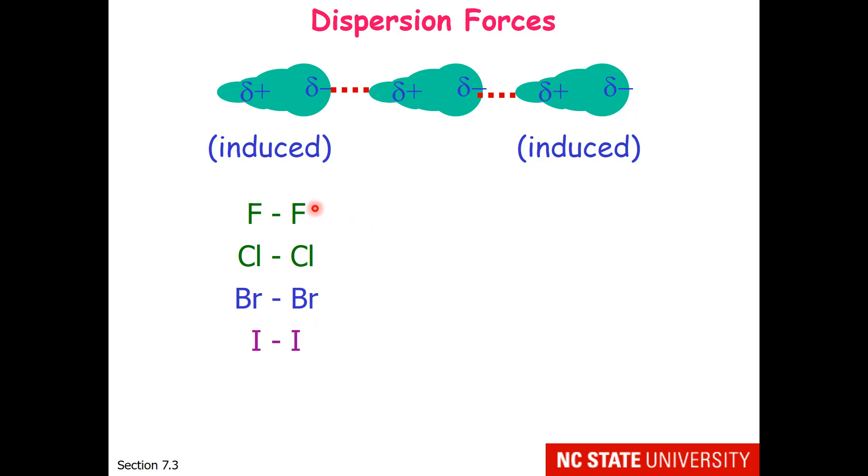The fluorine molecule, chlorine, bromine, and iodine molecule. Fluorine and chlorine at room temperature are gases. That means they have weak intermolecular attractions. Bromine at room temperature is a liquid. That means it has a stronger intermolecular attraction. And iodine at room temperature is a solid. So it has the greatest intermolecular attraction.